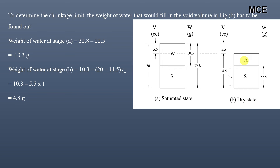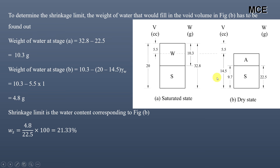With 4.8 grams as the weight of water filling the void volume in the dry state, we can find the shrinkage limit. Shrinkage limit = weight of water in void volume (4.8) divided by weight of solids (22.5), multiplied by 100, which equals 21.33 percent — the same result as from the direct formula.